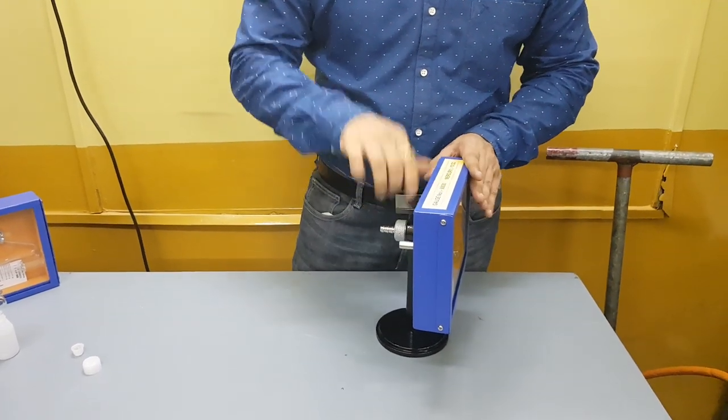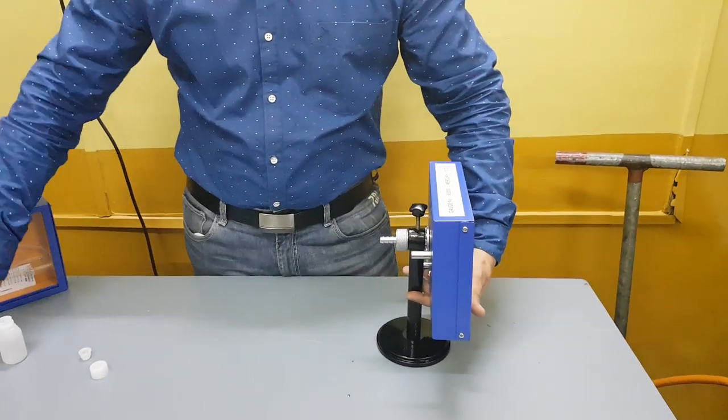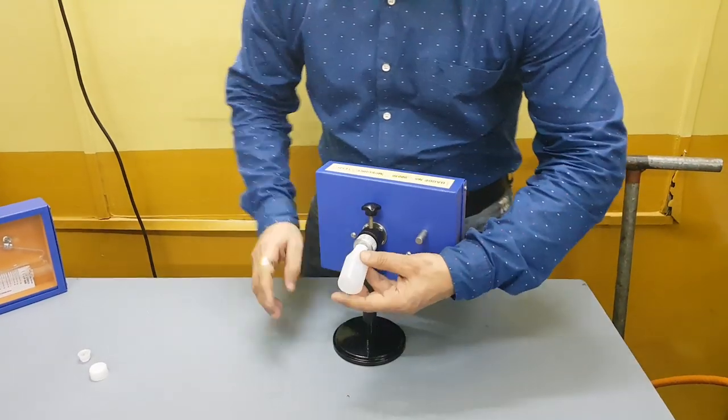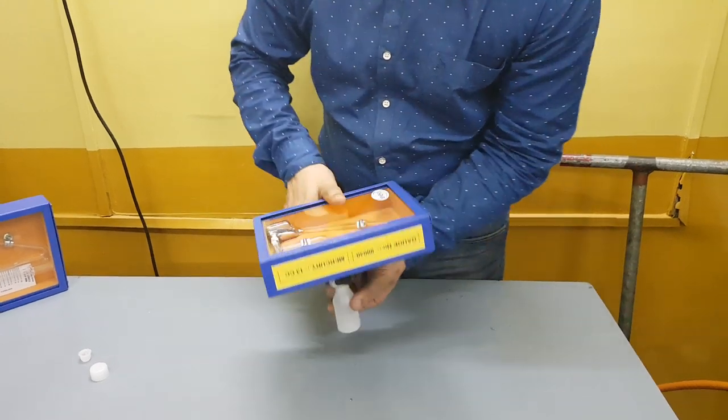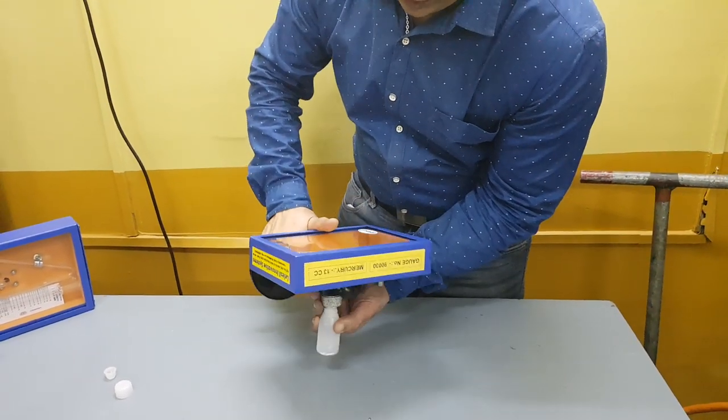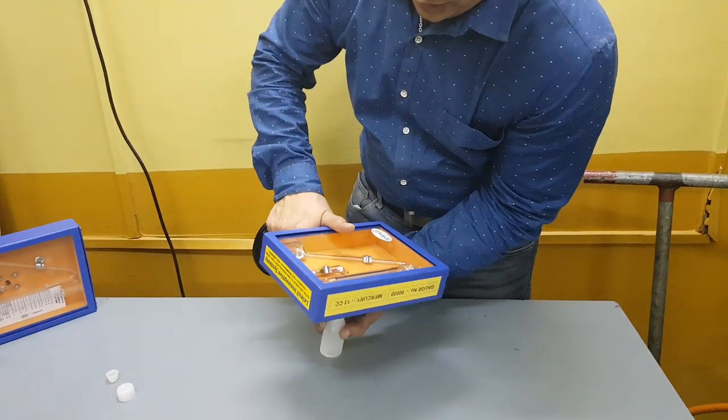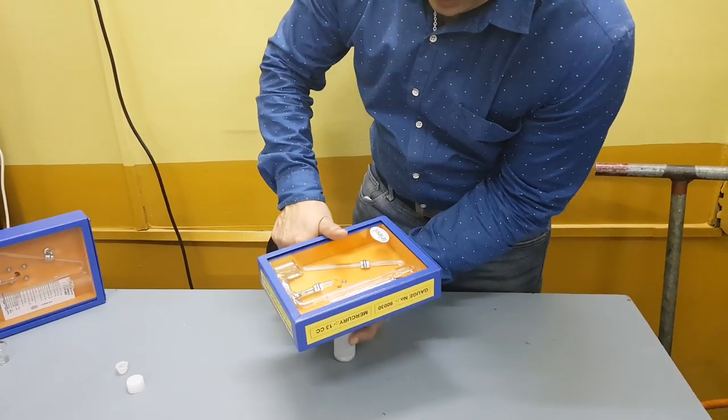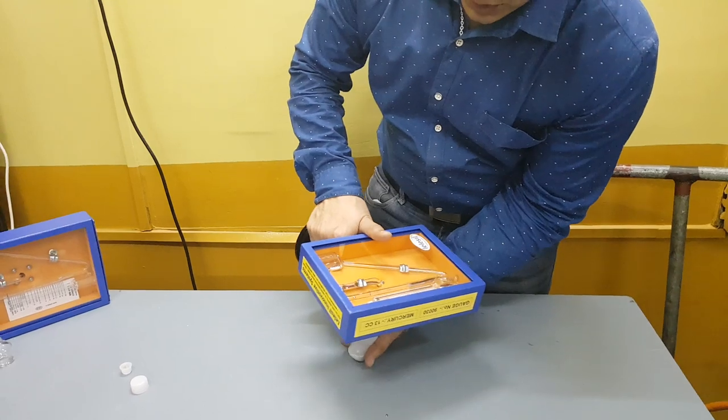When you want to remove the mercury, when you do not need to test the gauge, tilt it, connect the bottle, gradually remove the mercury back. Only do this if you have the experience to do it, otherwise there is a possibility that the quantity could spill out.